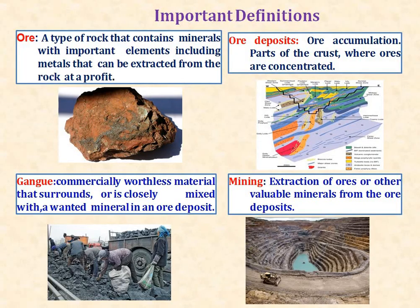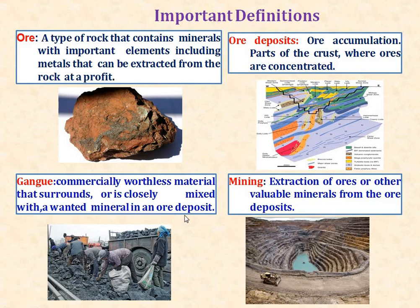Some important definitions in economic geology. First of all, ore is a type of rock that contains minerals with important elements including metals that can be extracted from the rock at a profit. An ore deposit is an accumulation of ore, or part of the crust where ores are concentrated. Gangue is the unwanted associate of ore minerals — that is, commercially worthless material that surrounds or is closely mixed with the ore mineral in an ore deposit.